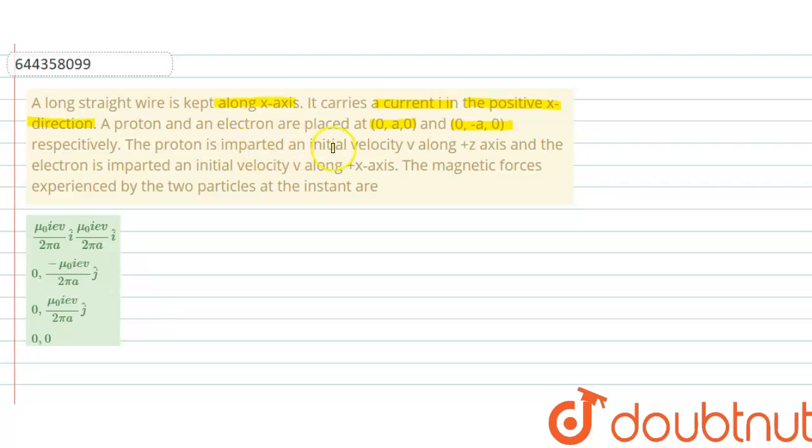The proton is imparted an initial velocity v along positive z-axis and electron is imparted an initial velocity v along positive x-axis. The magnetic forces experienced by two particles at the instant are given, and there are four options.